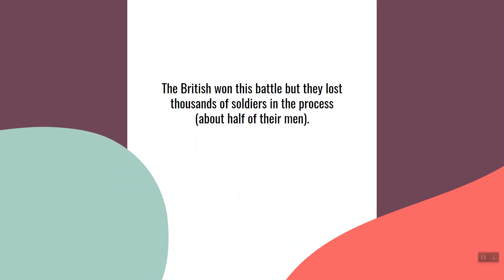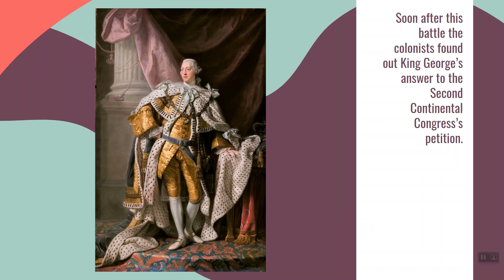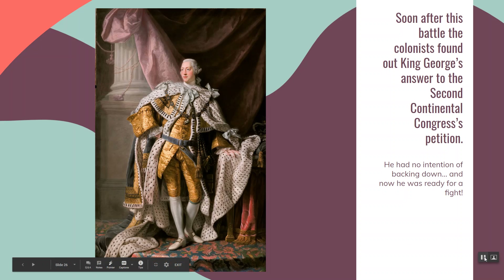The Battle of Bunker Hill was considered one of the most important battles of the war. Soon after, the colonists found out King George's answer to the Second Continental Congress's petition. King George had heard news of the fighting and had absolutely no intention of backing down — he was not going to let the colonists tell him what to do. And with the fighting that had already happened, he was ready for a fight. That's where we'll end, with more details to come next week.